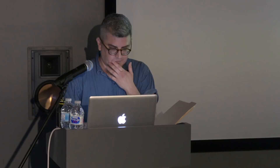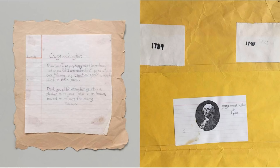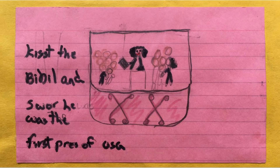On to non-fiction. I'll start with a piece from around the same era as The King — a presentation about George Washington. Everyone in my class was assigned a president and had to write a short biography. I don't understand how some things qualified as important enough to illustrate, but: 'He made himself known to the people. I was a very nice man and a very good leader.' And: 'Kissed the Bible and swore he was the first prez of USA.'